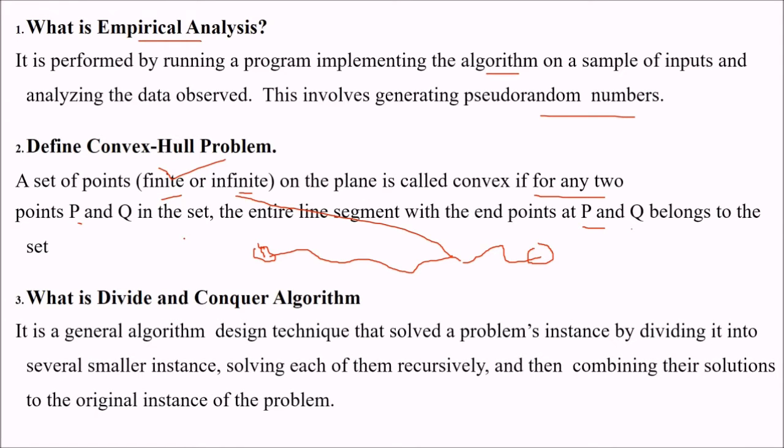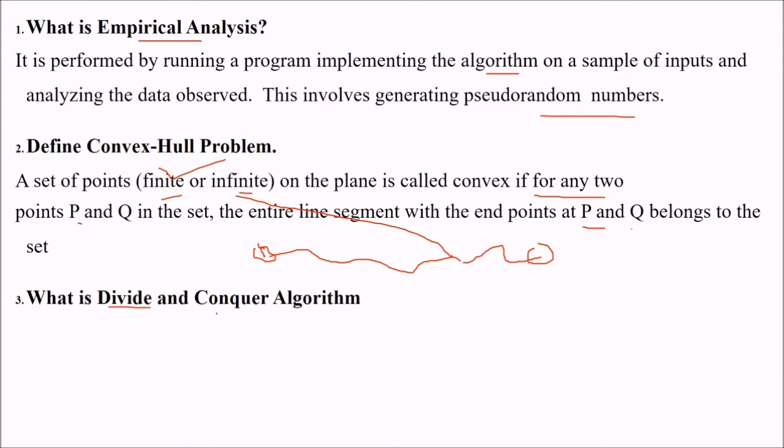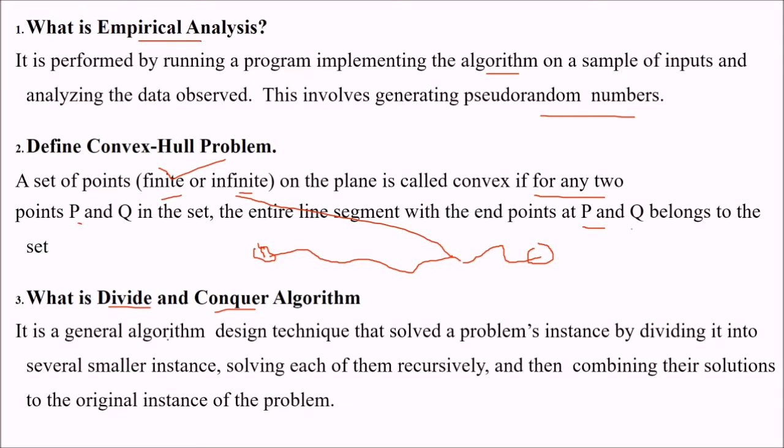What is divide and conquer algorithm? As the name suggests, first we divide and then conquer. This is a way of designing your algorithm. You can solve a problem by dividing into smaller instances, smaller parts and then we solve them recursively. Then once we solve them, we combine them and then we formulate the original instance of the problem.